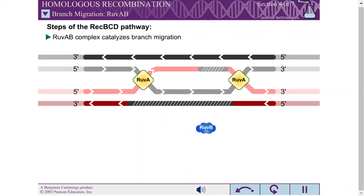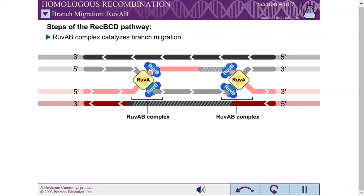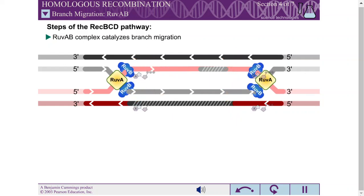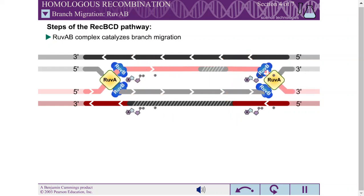RUV-A protein is a DNA-binding protein that recognizes the gross structure of the Holliday junction, regardless of its specific DNA sequence. RUV-A recruits two hexamers of RUV-B to each Holliday junction to form RUV-AB complexes. RUV-B is an ATPase, and ATP provides the energy to drive the exchange of base pairs during branch migration.